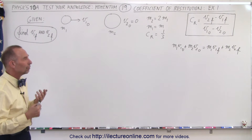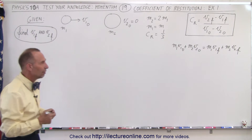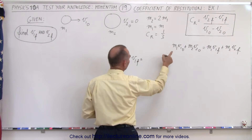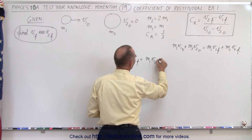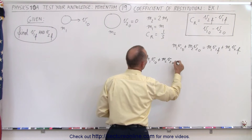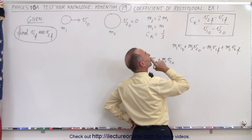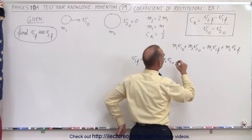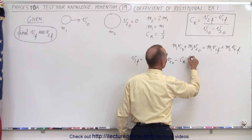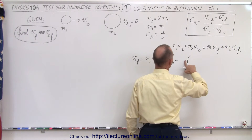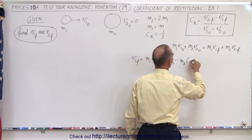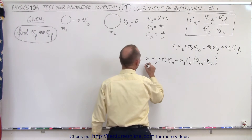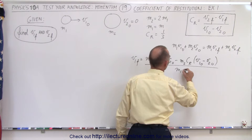In the last couple of videos, we learned how to find the final velocity for one of the two objects. So here, let's use this equation where v1 final is equal to m1 times v1 initial, plus m2 times v2 initial, minus m2 times the coefficient of restitution times (v1 initial minus v2 initial), all divided by m1 plus m2.